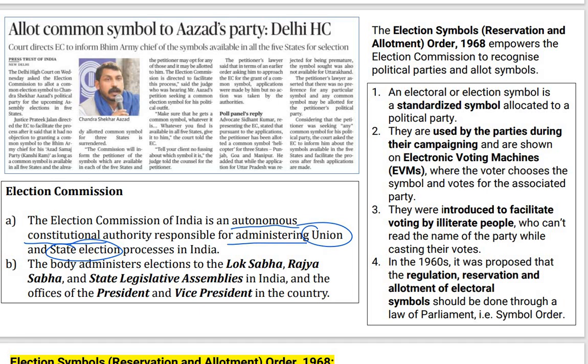There is the Election Symbols Order 1968, which talks about the allotment of symbols to political parties and also recognizes political parties. It is not that anyone can simply form a political party — there are procedures to recognize a party. This order empowers the Election Commission to allot symbols and register political parties. A correct definition: an election symbol is a standardized symbol through which you can recognize a particular political party.